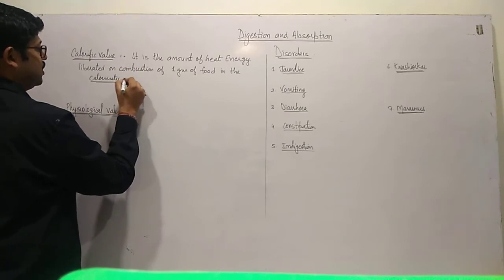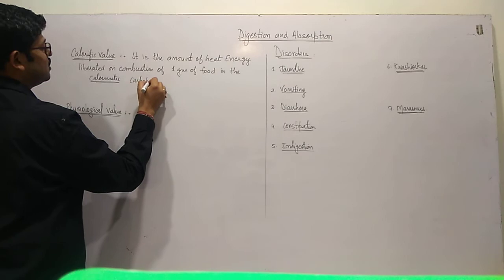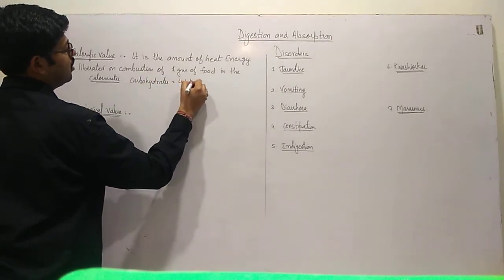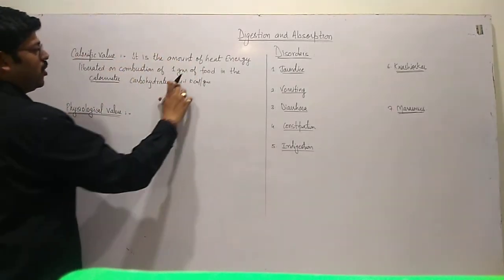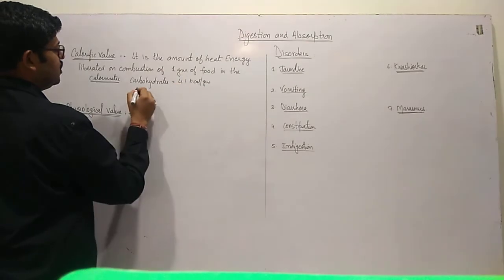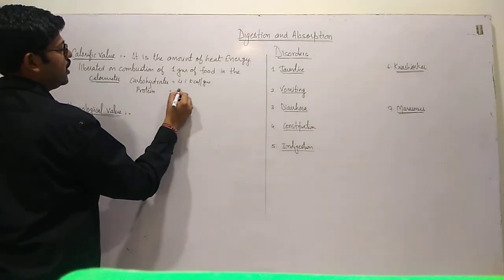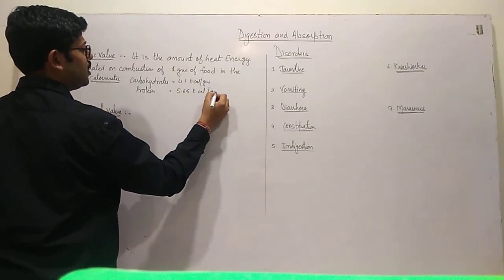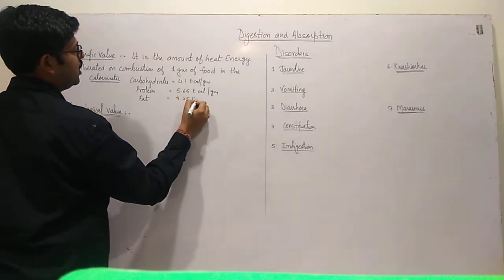For carbohydrates, the Calorific Value is 4.1 kilocalories per gram.